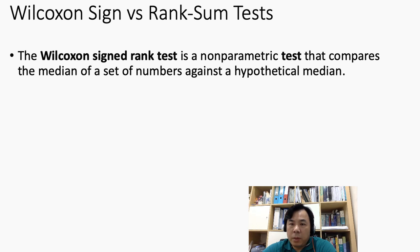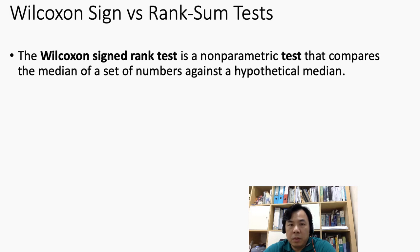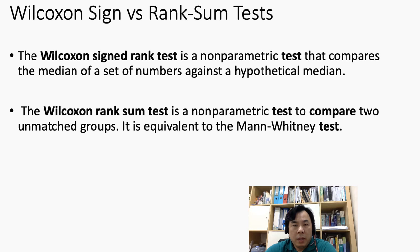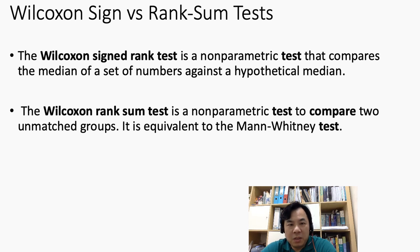The Wilcoxon signed rank test is a non-parametric test that compares the median of a set of numbers against a hypothesized median — we compare our data observations with the median. The Wilcoxon rank sum test is also a non-parametric test, but it is used to compare two independent, unmatched groups of data. This test is quite similar to the Mann-Whitney test, though we don't cover that in our syllabus.